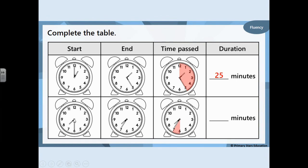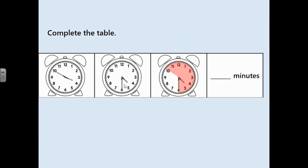Let's look at this next one. It's half past 7 and it ends at 25 to 8. The minute hand was on 6 then went to 7, so the duration was 5 minutes. Now the start time is 10 to 4 and the end time is half past 4.